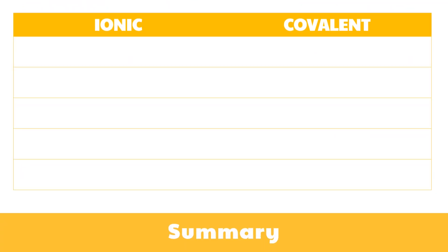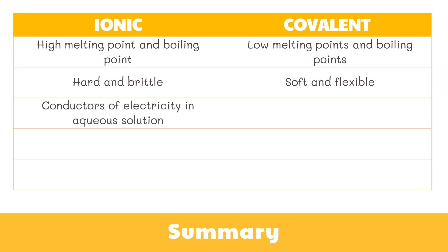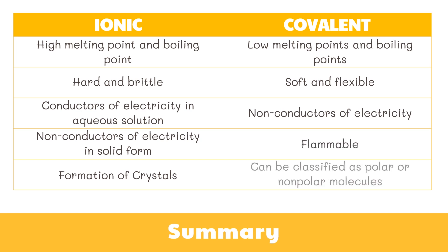To summarize: ionic compounds have high melting and boiling points, while covalent compounds are the opposite. Ionic compounds are hard and brittle, while covalent compounds are soft and flexible. Ionic compounds conduct electricity in aqueous form but not in solid form, while covalent compounds generally do not conduct electricity at all. Ionic bonds form crystals, and covalent compounds are flammable and can be further classified as polar or nonpolar.